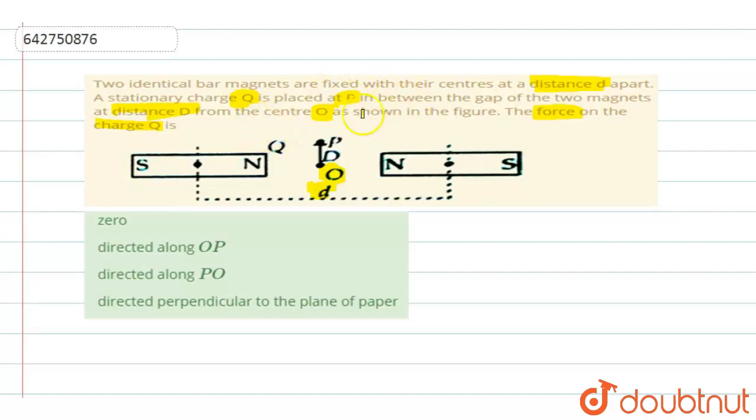Now, if this is the situation, then you are asked to find the force on the charge q. So the charge q is placed at this point P. When you are placing a stationary charge at P, see the charge is stationary.